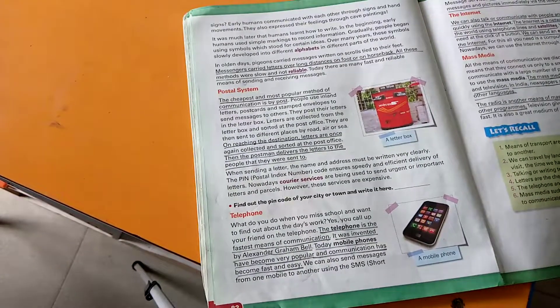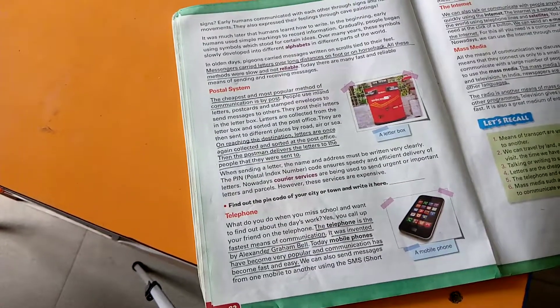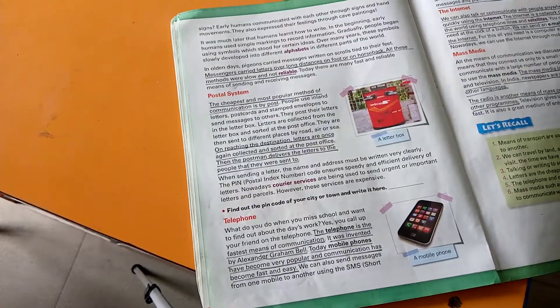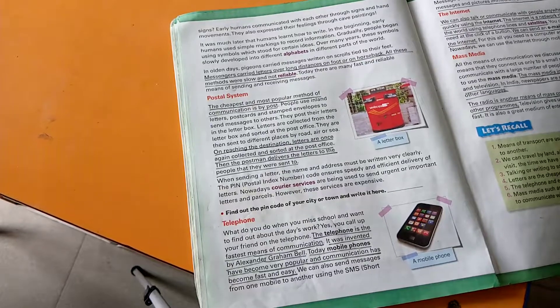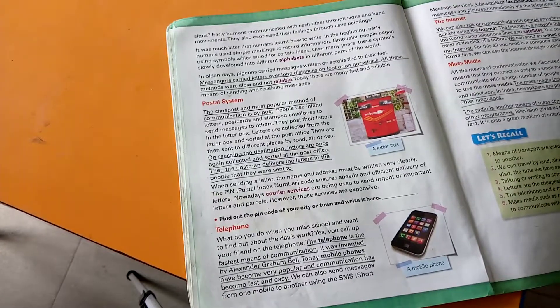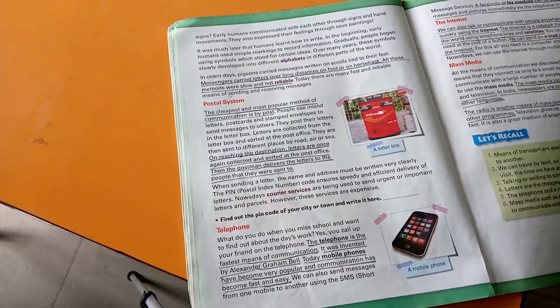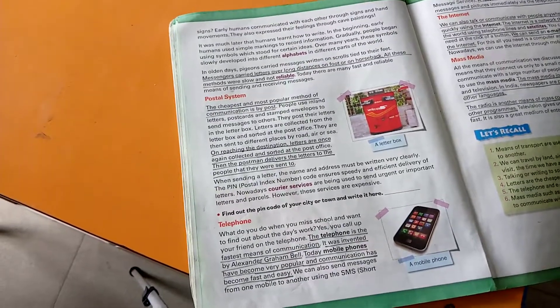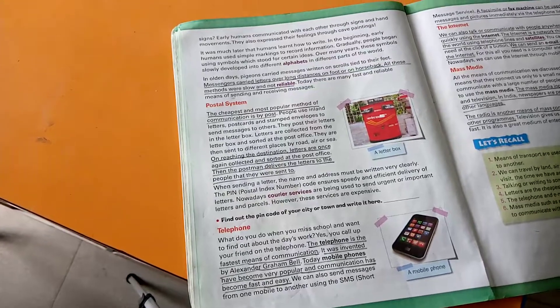The second means of communication is the telephone. What do you do when you miss school and need to find out about the day's work? Yes, you call up your friend on the telephone. The telephone is the fastest means of communication. It was invented by Alexander Graham Bell. Today mobile phones have become very popular and communication has become fast and easy. We can also send messages from one mobile to another by using SMS.